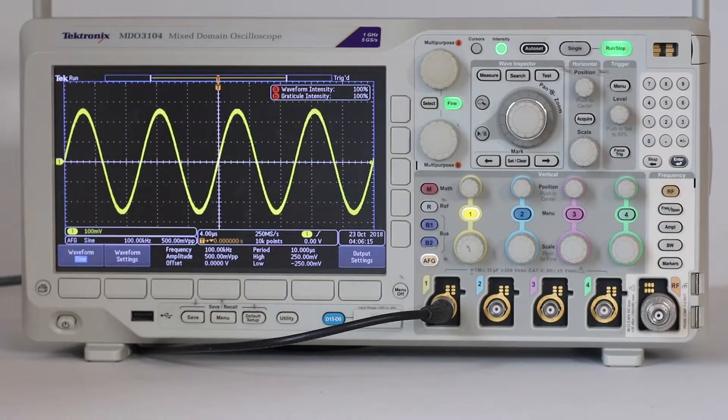The single scale knob in the horizontal section can be turned by the user to expand or compress the time interval within each of the ten industry standard horizontal divisions. In that way, the waveform depicted spreads out until it appears to be an almost flat line.